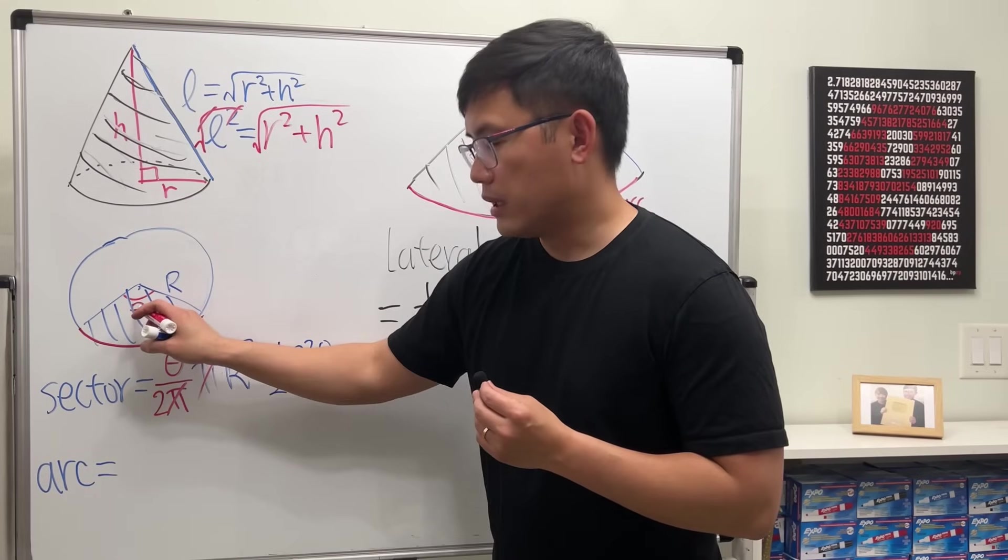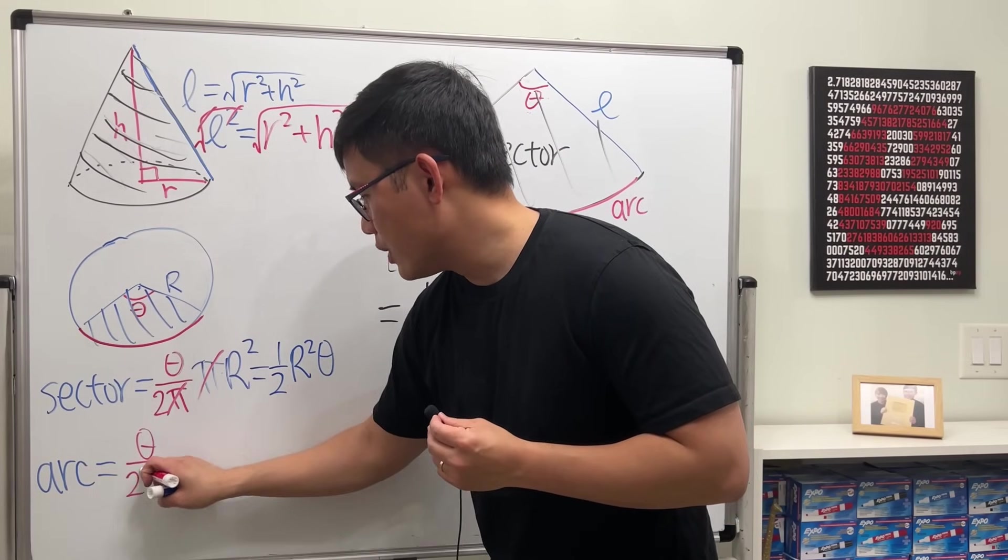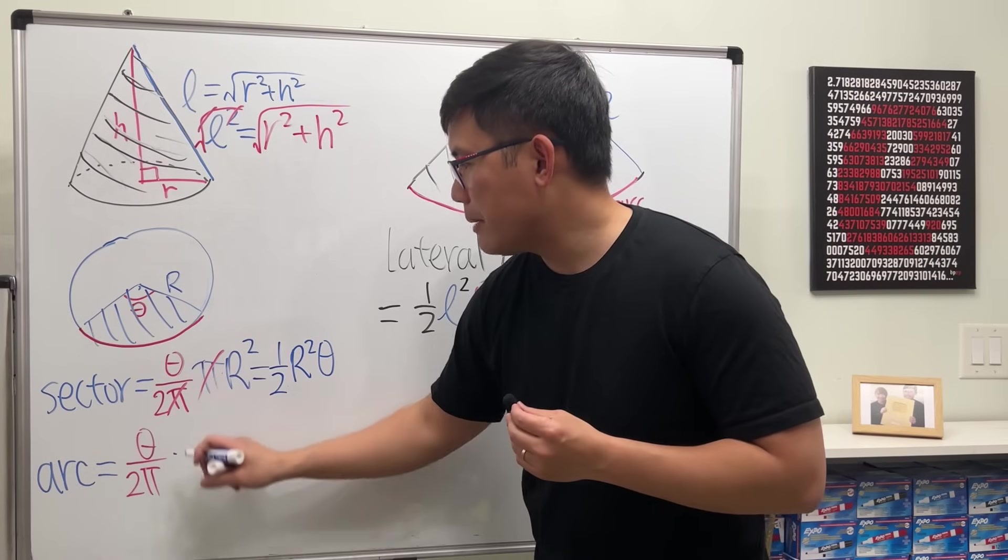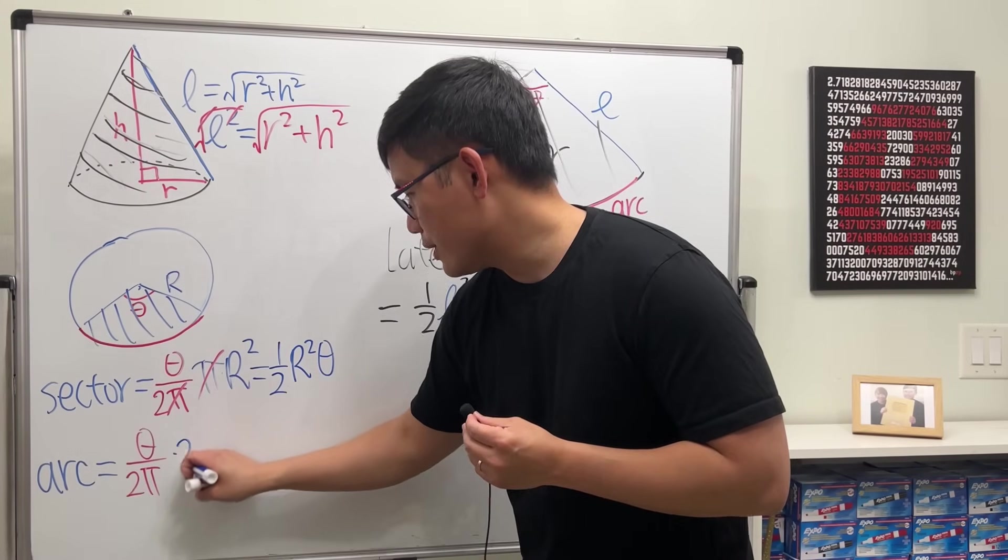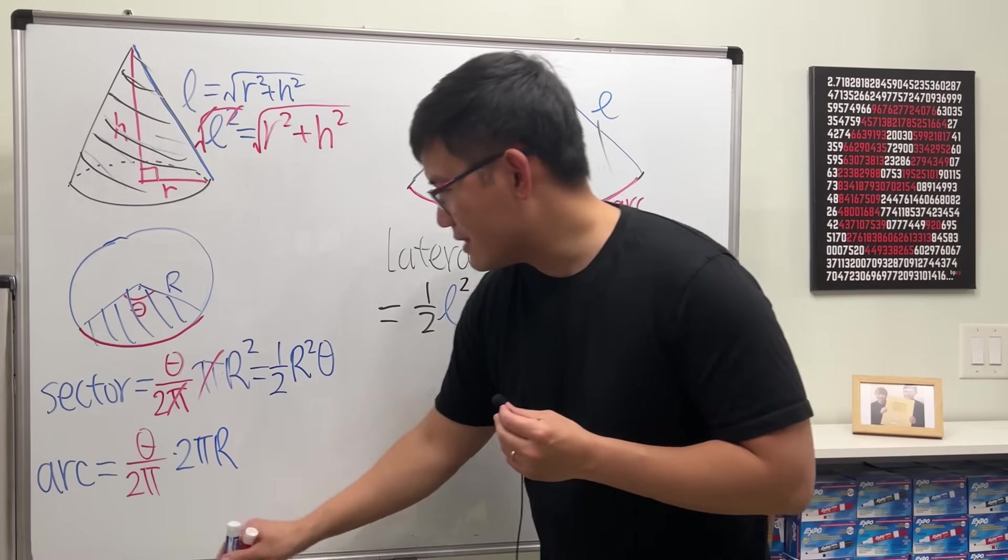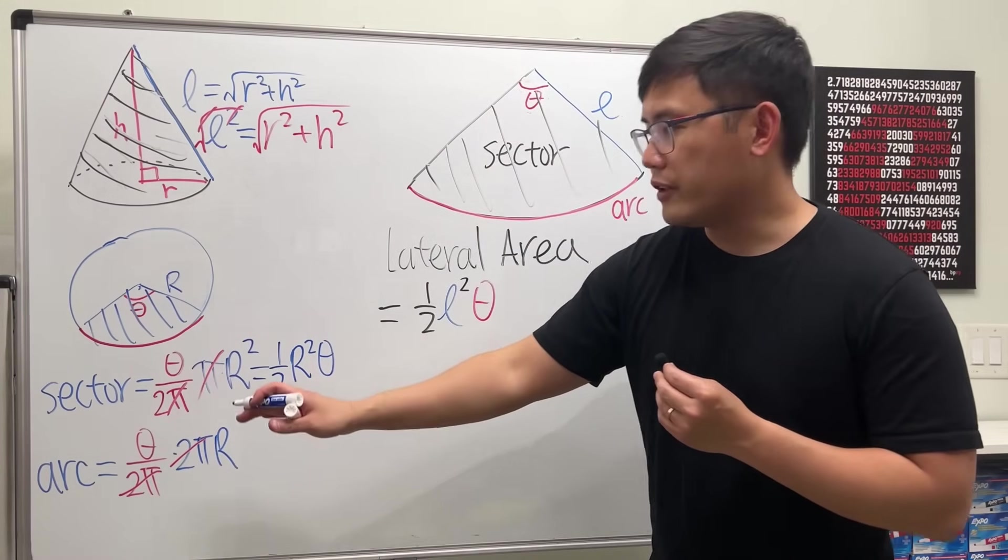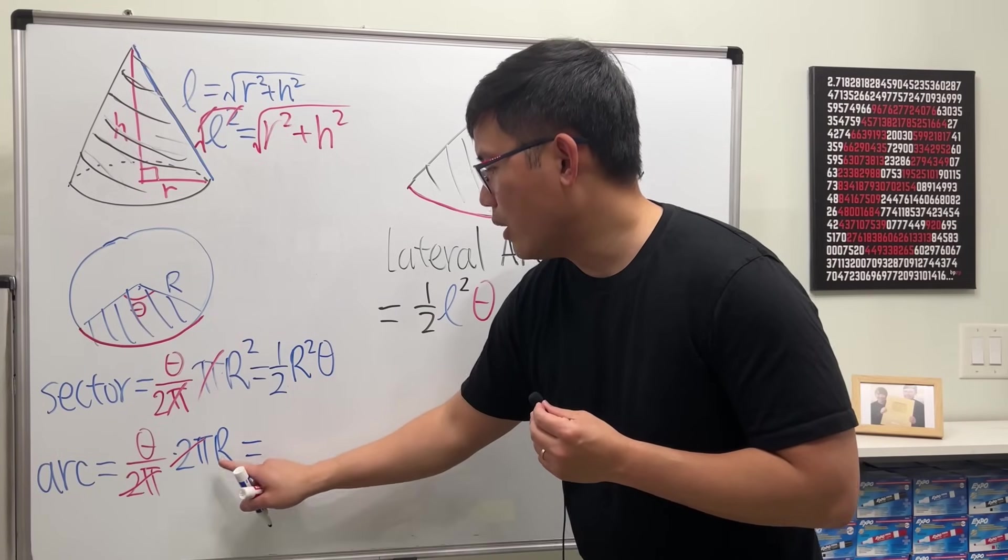which is 2 pi r. And as we can see, 2 pi and 2 pi cancel. So the formula for the arc length, it's equal to r times theta.